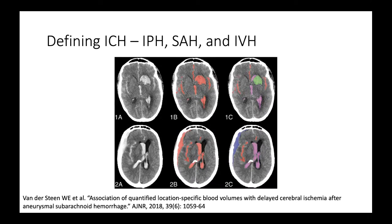It's important to define intracerebral hemorrhage or ICH. It's composed of multiple different forms of spontaneous brain hemorrhage. There's intraparenchymal hematoma or hemorrhage (IPH), which is blood in the parenchyma of the brain; subarachnoid hemorrhage occurring in the subarachnoid space; and interventricular hemorrhage or IVH. Collectively, ICH represents various different locations of blood.